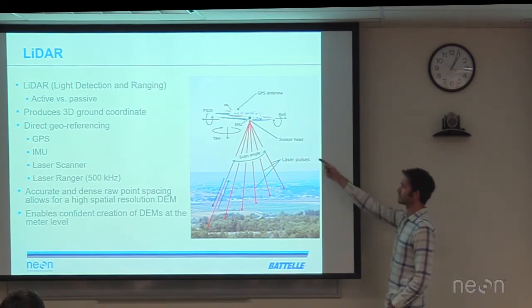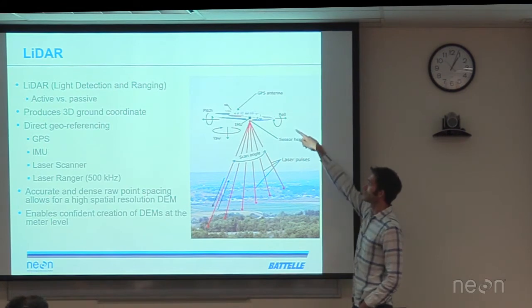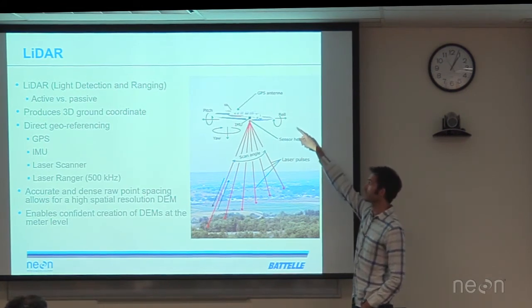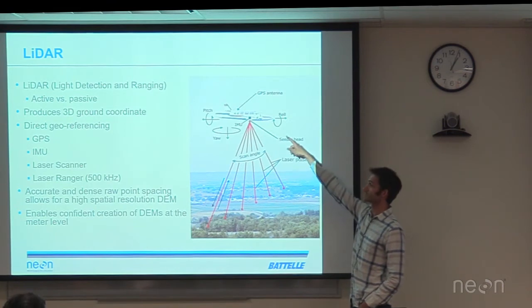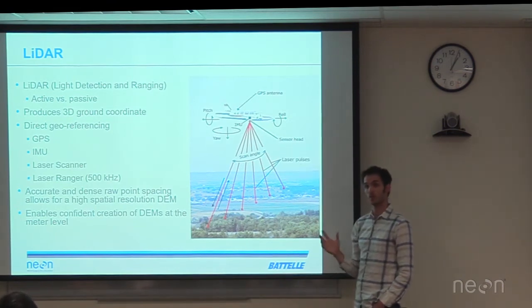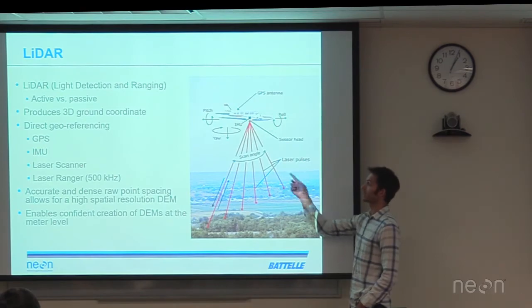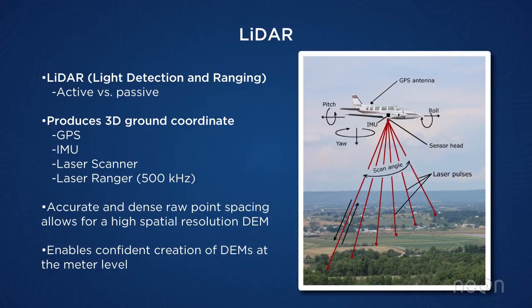We also have a GPS sensor on the roof of the aircraft to get the aircraft position, an inertial measurement unit inside the aircraft to get the orientation — roll, pitch, and yaw — and then a scanning mirror, which directs the laser pulse within a swath beneath the aircraft. When you combine all of these subsystems together, you can coordinate points on the ground based on all the observations.